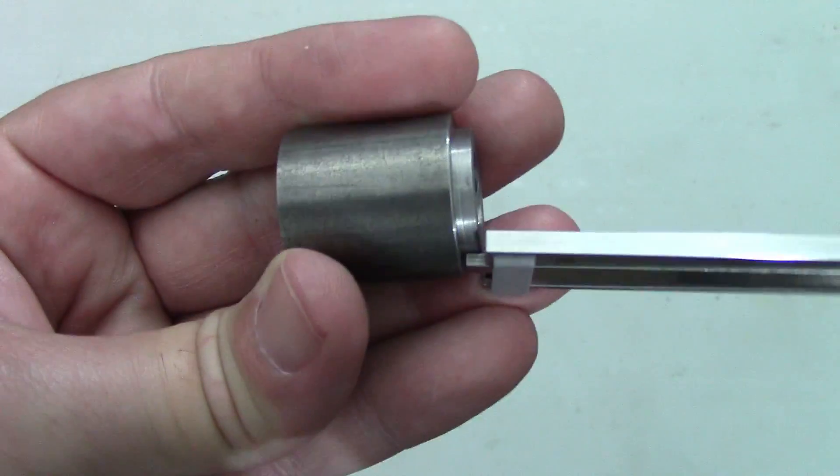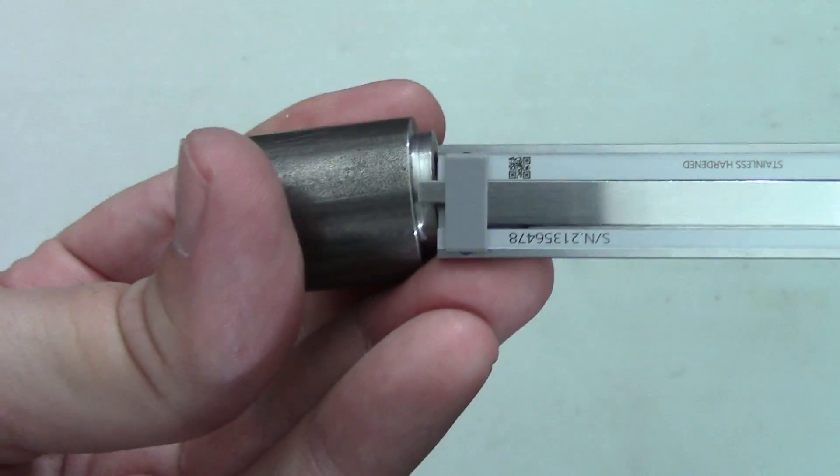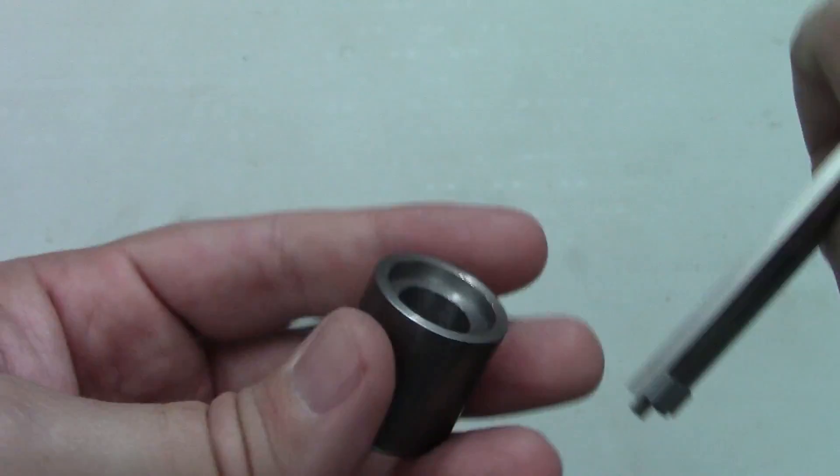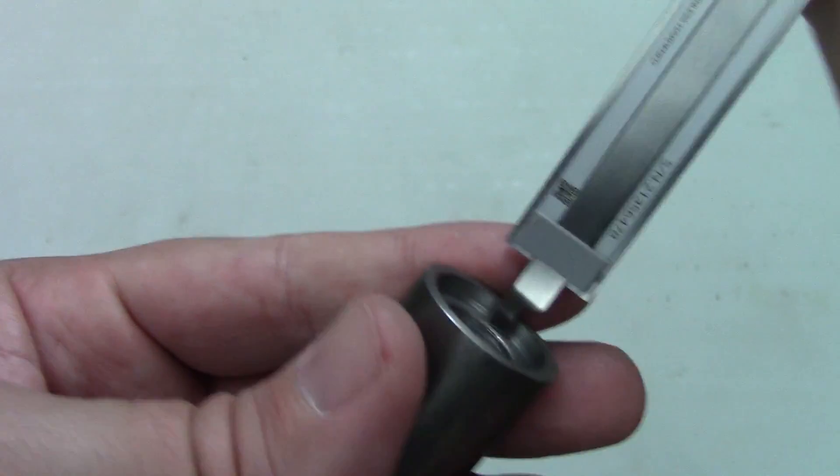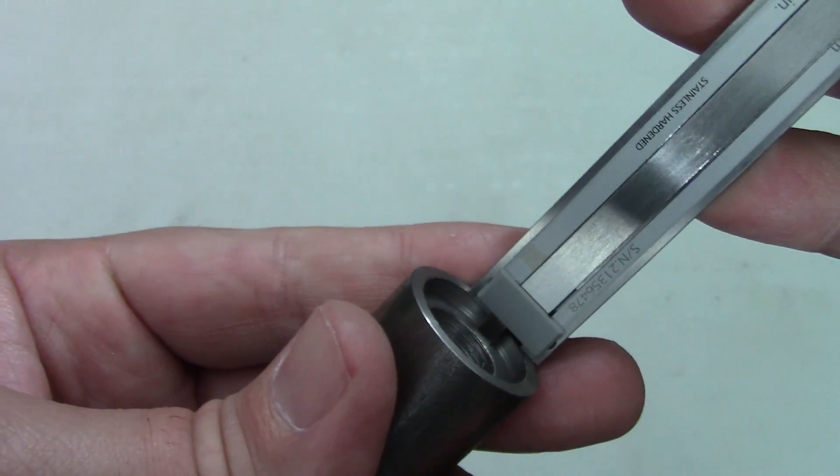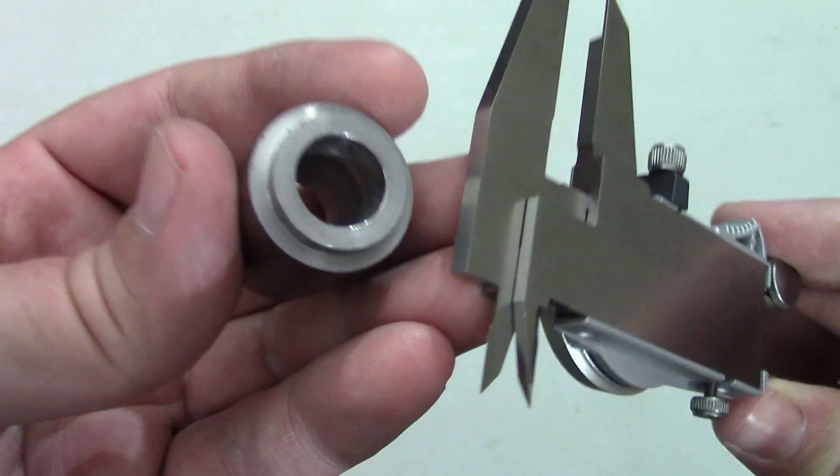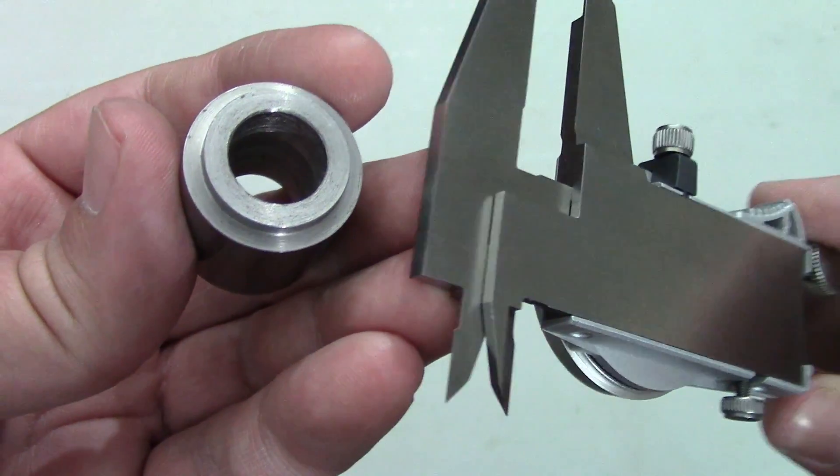The depth rod is just better suited to situations where the end of the calipers can be supported by the part. The best option for a feature like this one is to use the step measurement on the ends of the jaws.